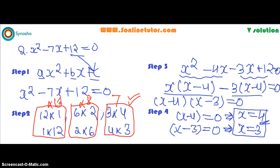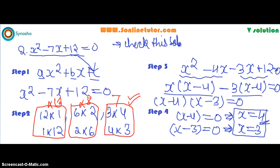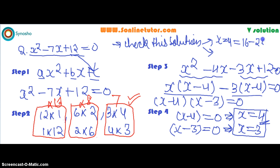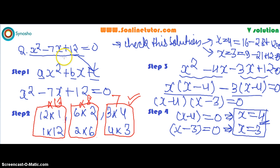The most amazing thing is how to verify that both solutions are correct. To check, we substitute each value back into the equation. Substituting x equals 4 gives 16 minus 28 plus 12, which equals 0. Substituting x equals 3 gives 9 minus 21 plus 12, which also equals 0. Both values satisfy the equation, confirming they are the correct solutions.